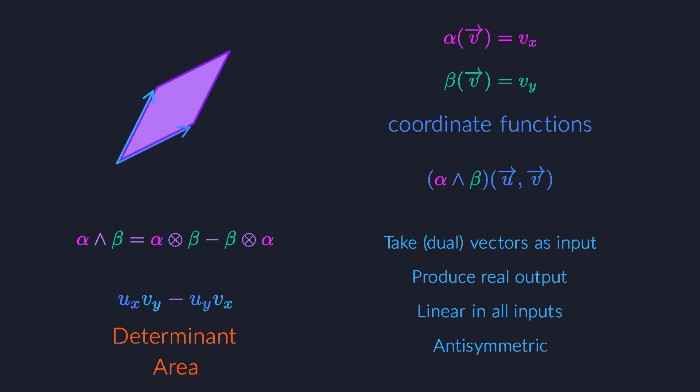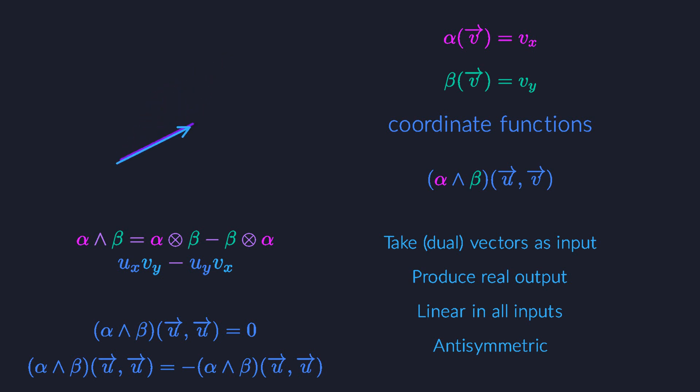One consequence that anti-symmetry does have is that when you pass the same vector to the function twice, the result must be zero. You see, when you swap the two inputs, the result should pick up a minus sign. But because the two inputs are the same, the result should also be the same after swapping. So we need a real number that swaps its sign and remains the same. The only real number that can pull this off is zero. And guess what? That's exactly the area of a flat parallelogram between a vector and itself. So the area function works correctly because it's anti-symmetric.